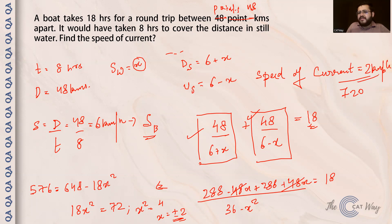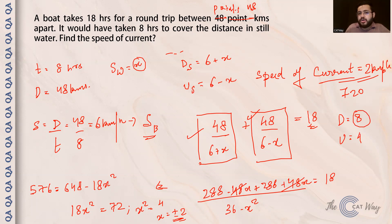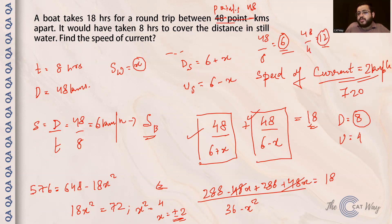We can verify: speed of current = 2, speed of boat = 6, so downstream = 8 km/h and upstream = 4 km/h. Time downstream = 48/8 = 6 hours; time upstream = 48/4 = 12 hours. Total = 6 + 12 = 18 hours. Verified! The correct answer is 2 km/h. Hope everything is clear with respect to boats and stream.